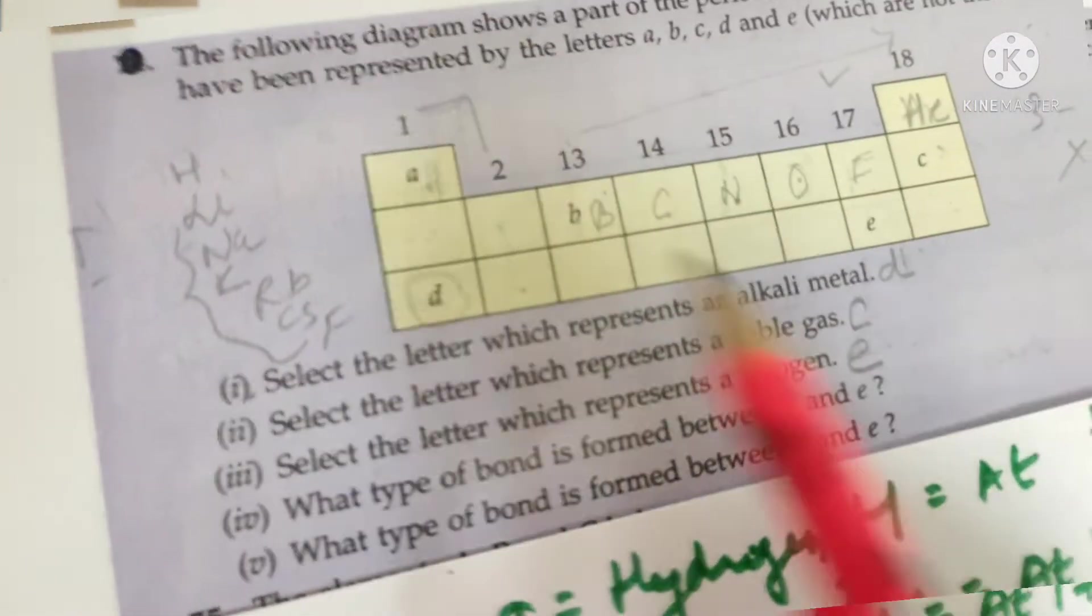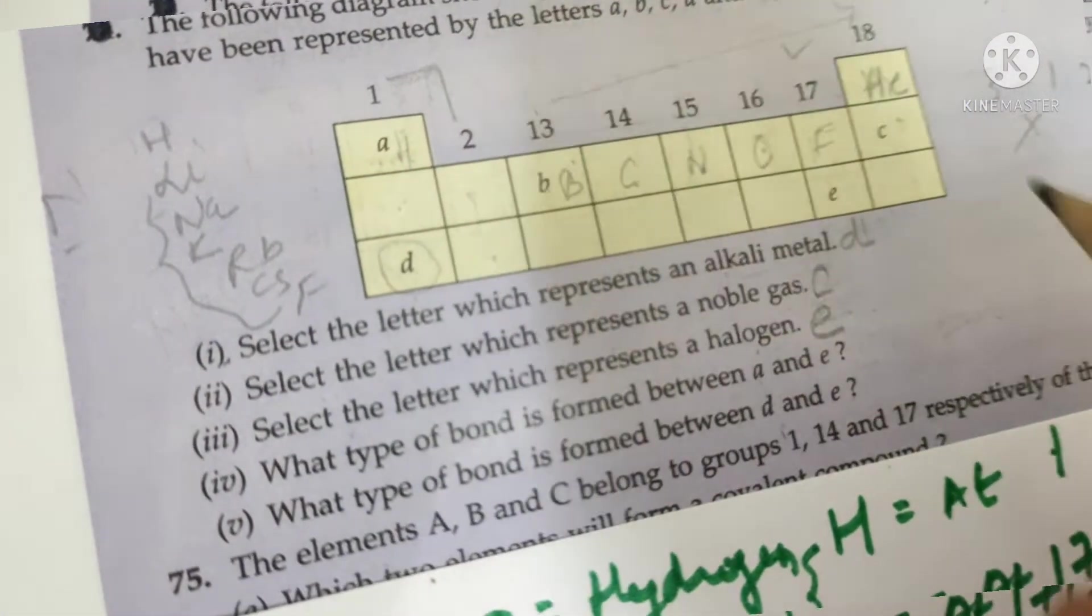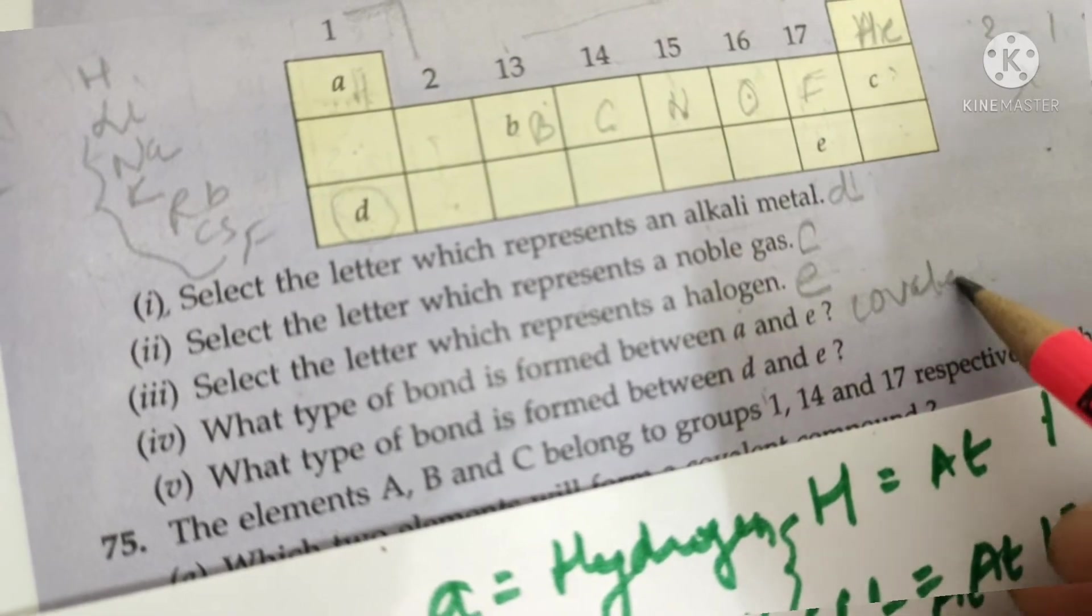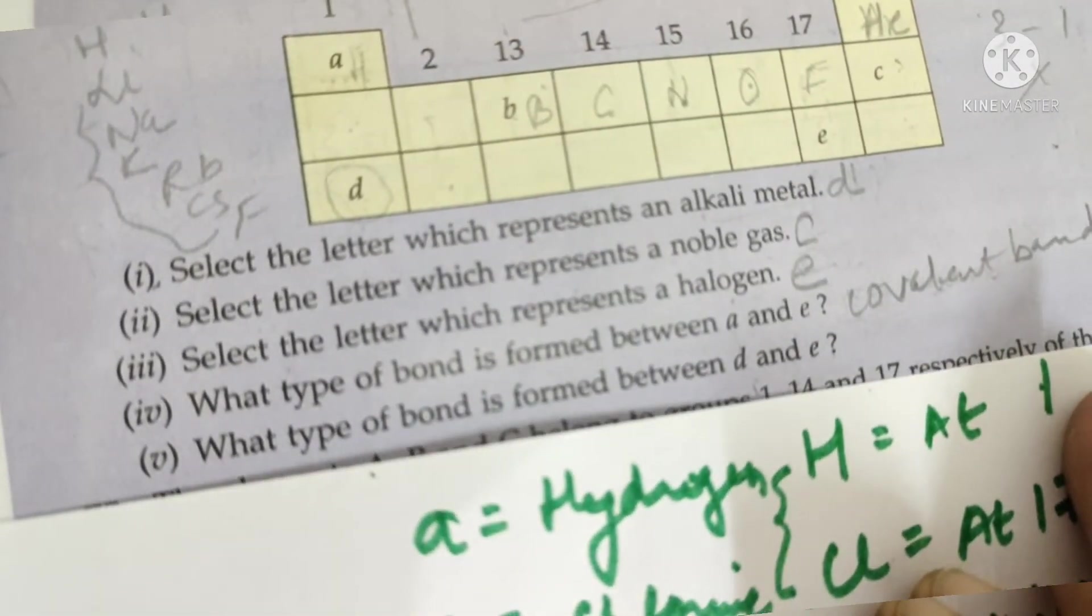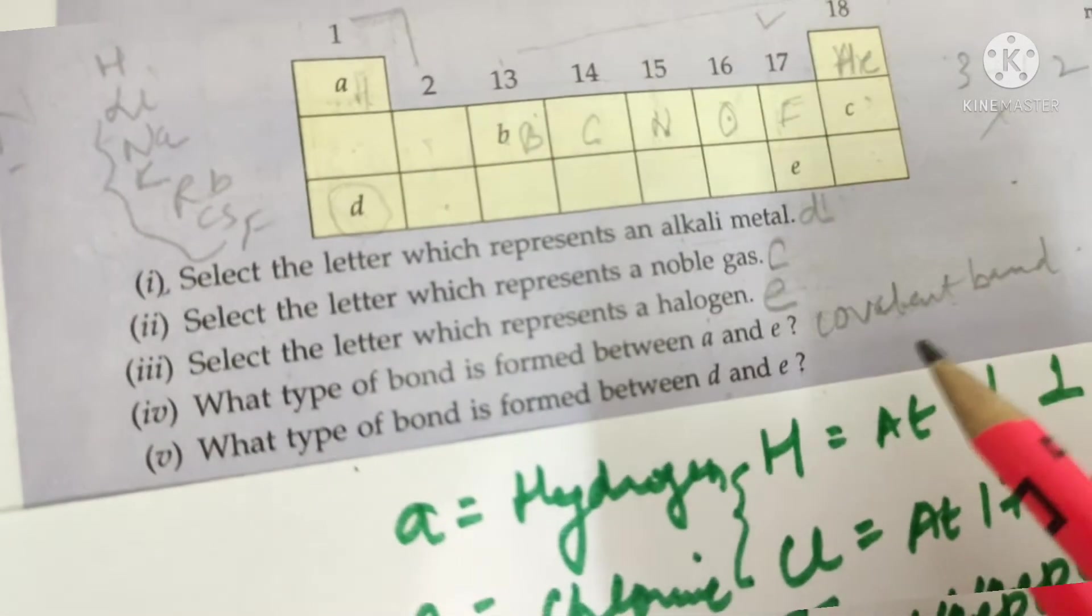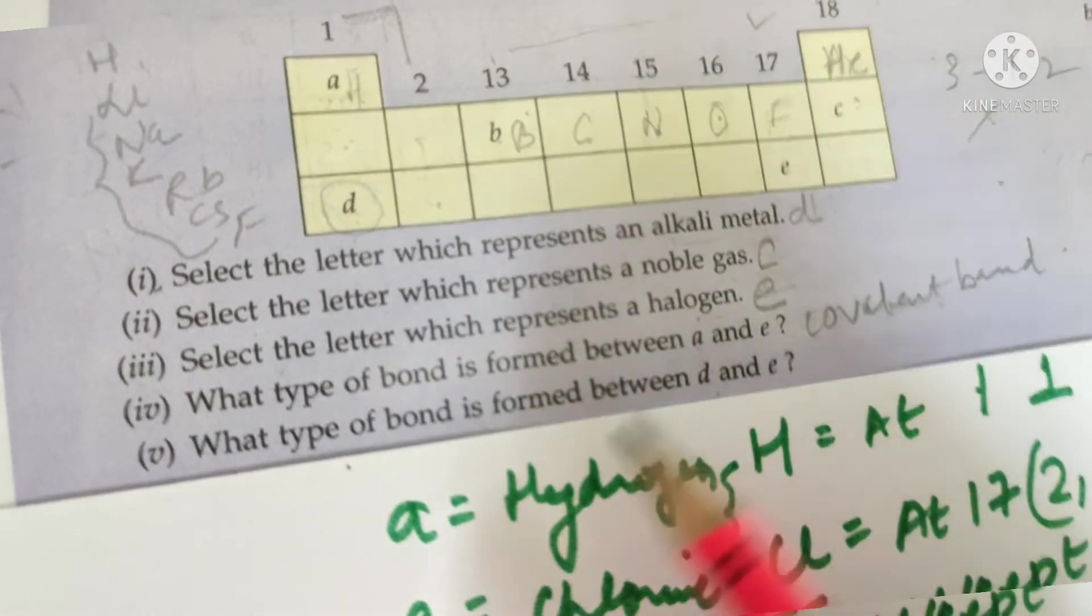So what is my answer? The bond between A and E is a covalent bond. I hope it is clear. I hope it is clear, covalent bond. Next,